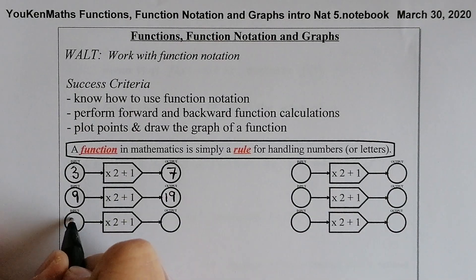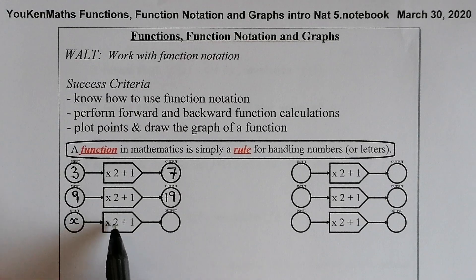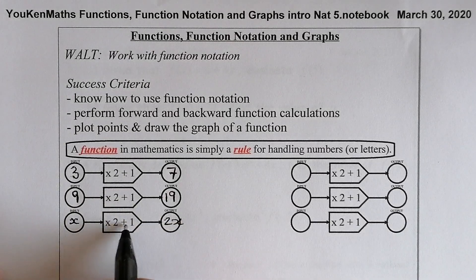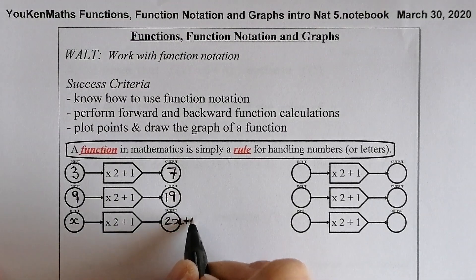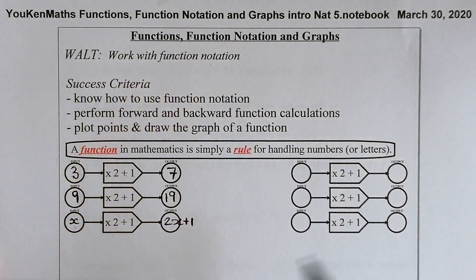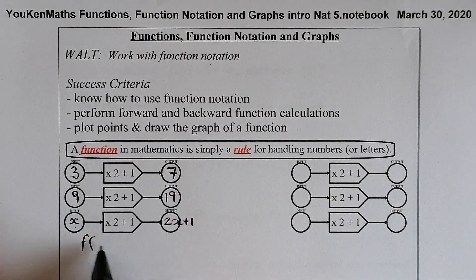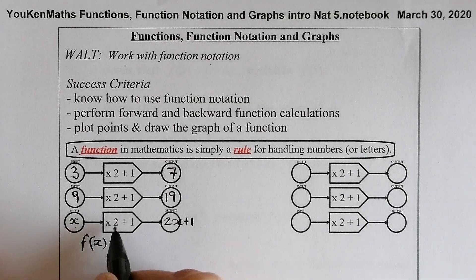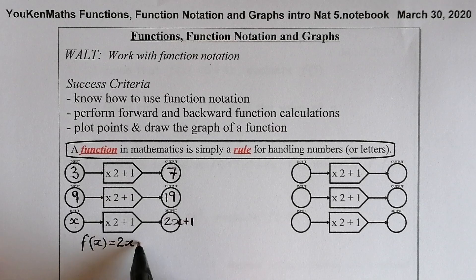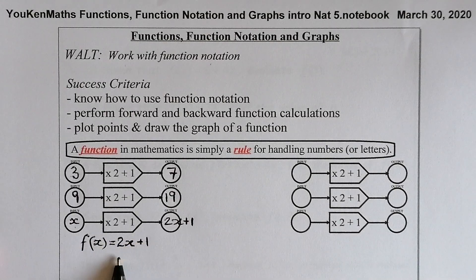What if we put a letter in — what if I put x in? We're going to go for two times whatever's there, so two times x is 2x, and we add one, so that's 2x plus one. What comes out when you put an x in is 2x plus one. We've got a special way of writing that in function notation: f of x. So f of x is equal to two times x plus one — that's our function written in function notation, doubling something that goes in and adding one.